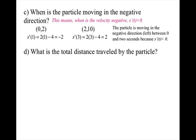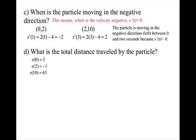What is the total distance traveled by the particle? At t equals 0, the particle is at 3 feet — I just plugged 0 into my position function. At t equals 2, because that is when it's not moving, the particle is at the position of negative 1. And then at t equals 10, I plug 10 into the position function and get a position of 63.